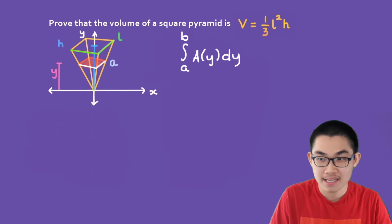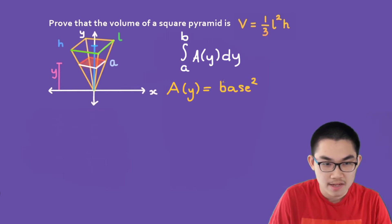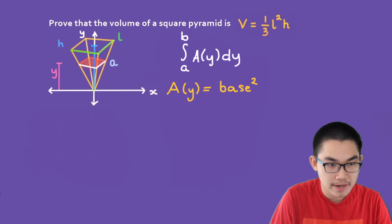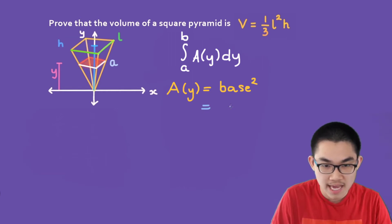Now let's find the area of the cross-section. A(Y) is equal to the base squared, because that is the area of the square. We know that the base is A, so we can replace it, giving us A squared.